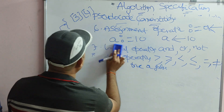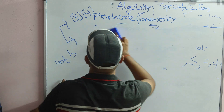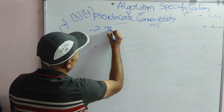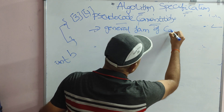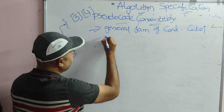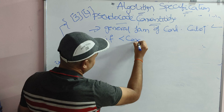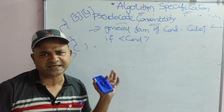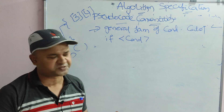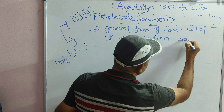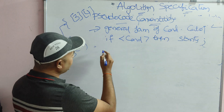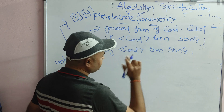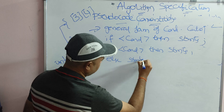Now let us see control statements. For conditional statements, the simple if syntax is: 'if (condition) then statements' — the parentheses around the condition are optional. For if-else: 'if condition then statements else statements'. For example: 'if A > B then { print A is big; } else print B is big;'. If there is only one statement, curly braces are optional; if there are multiple statements, it is better to use curly braces.